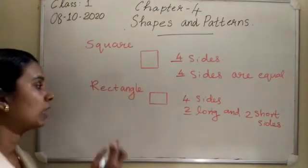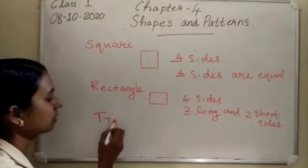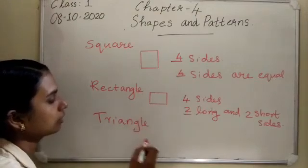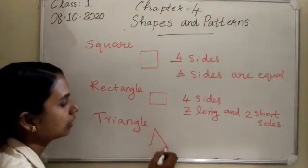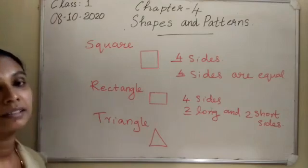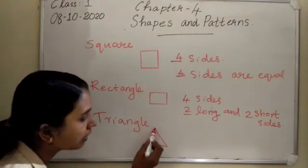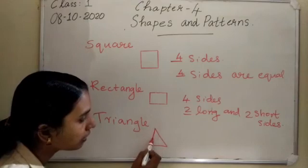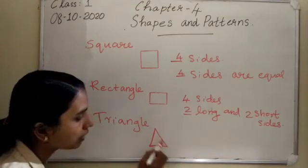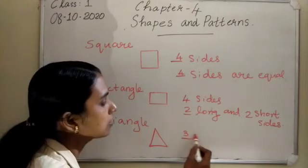The next one is a triangle. It has three sides - three straight lines. A triangle is made up of three straight lines.